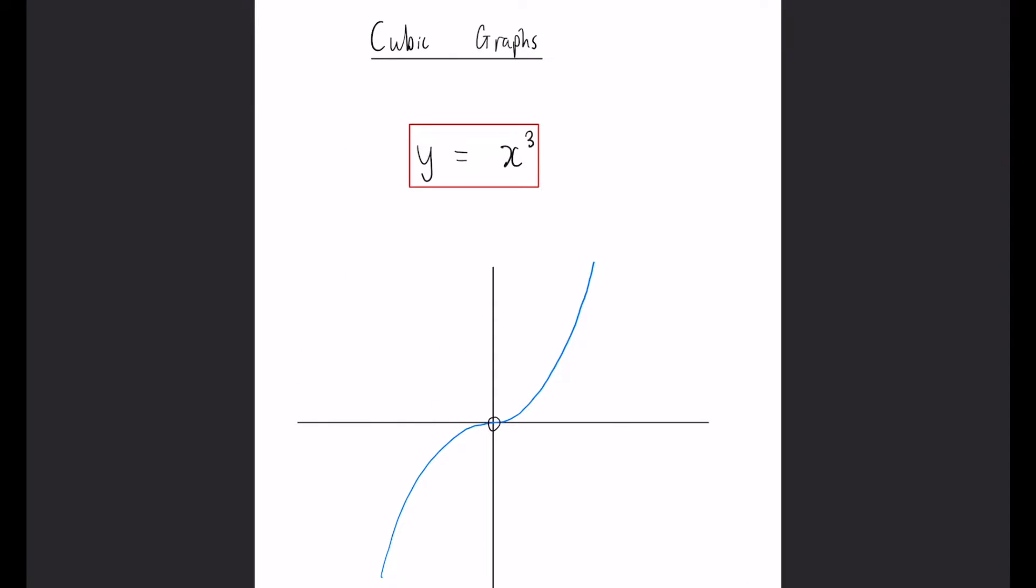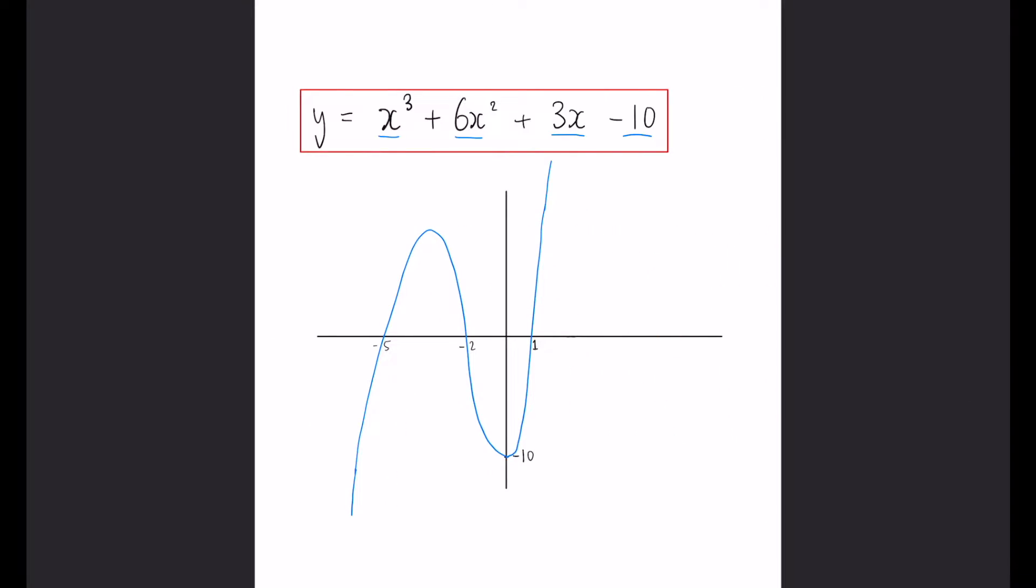Notice, both of these are examples of positive cubic graphs. So, the graph starts in the bottom left, does its little wiggle, and ends up in the top right. Both of these are exactly the same.